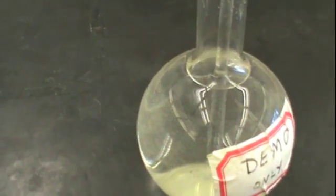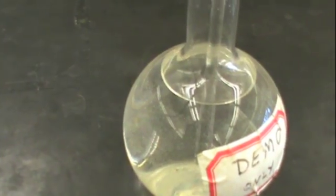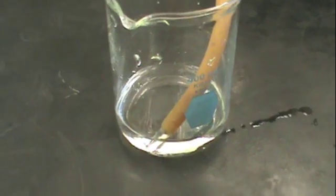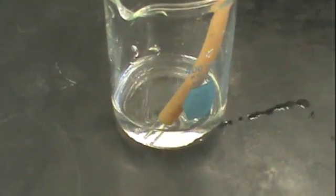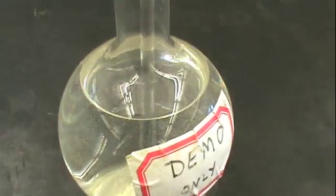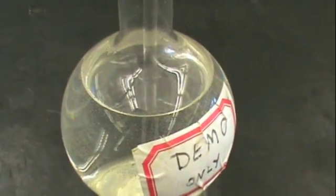You will notice that water begins flowing out of the Florence flask and into your beaker immediately. You do not need to continuously shake your flask with the peroxide and yeast for the reaction to keep going.